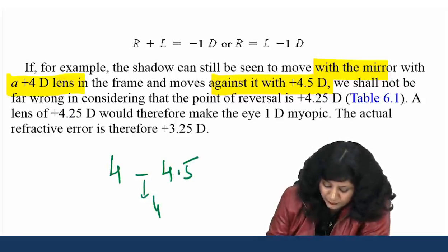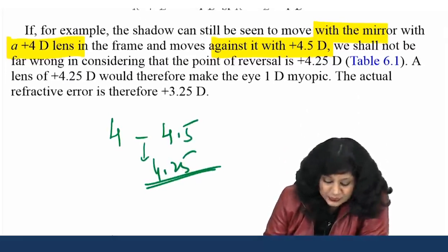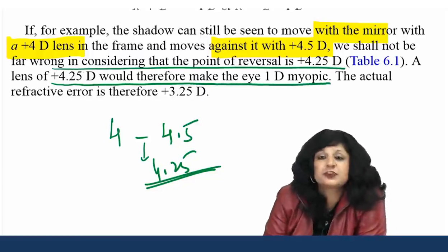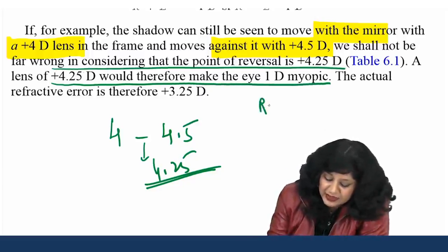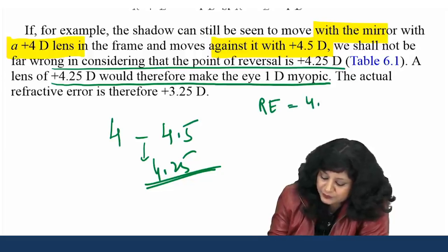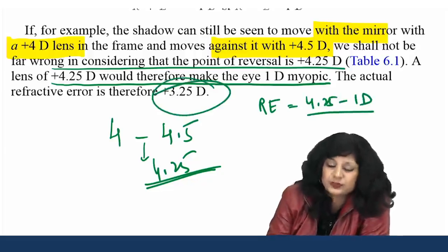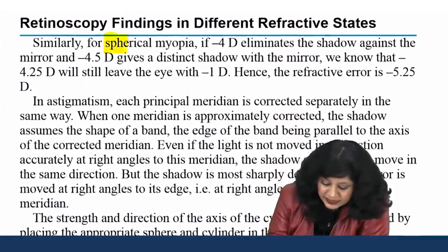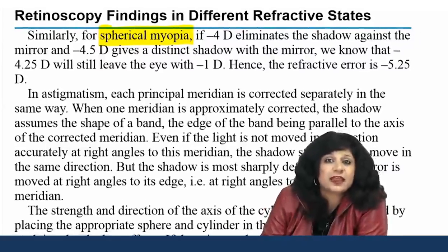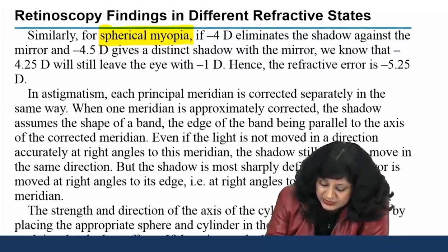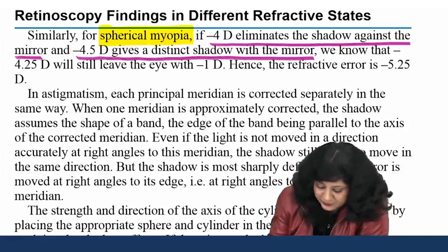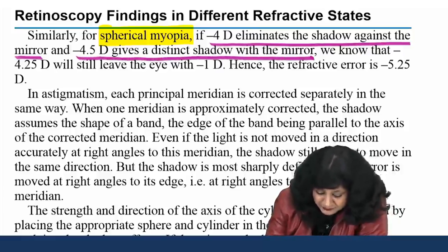With high refractive errors, the initial glow may be so faint that the direction of movement is difficult to determine. You may have to empirically try a high plus or high minus lens to see what type of refractive error is present and proceed. If the glow is faint, you can also shorten the working distance to get a brighter image, or use the concave mirror position to get a brighter image — two useful tricks.